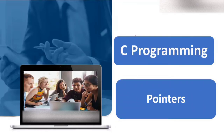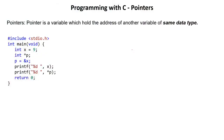Hello and welcome. Today the topic of discussion is C programming — we'll understand what pointers is all about. The definition is: a pointer is a variable which holds the address of another variable of the same data type. This is a very important line.